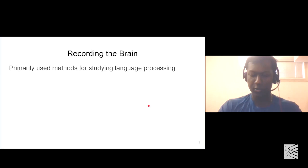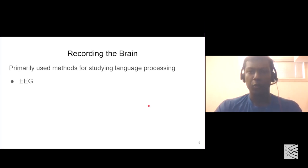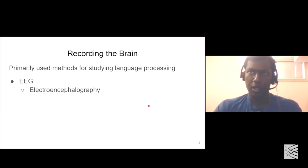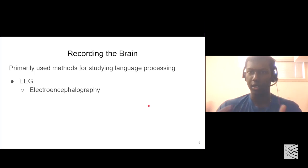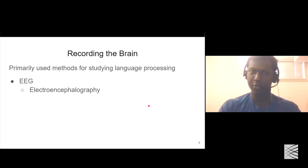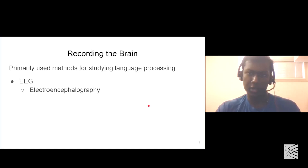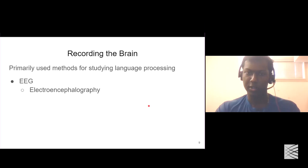We use methods to capture or record the brain. One of the methods is EEG, or electroencephalography. In EEG, participants are asked to wear an EEG cap with small electrodes. It's non-invasive — you only wear a cap on your head, no surgery involved. Those electrodes record the electric currents or electric fields generated by the electric currents that take place inside the brain.